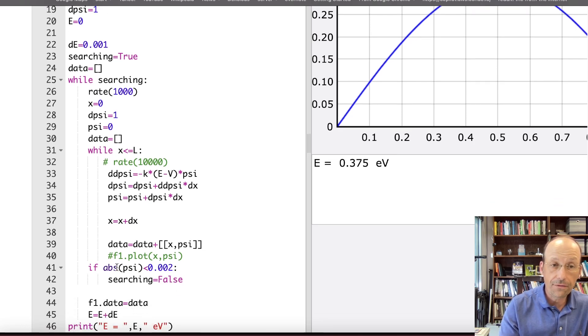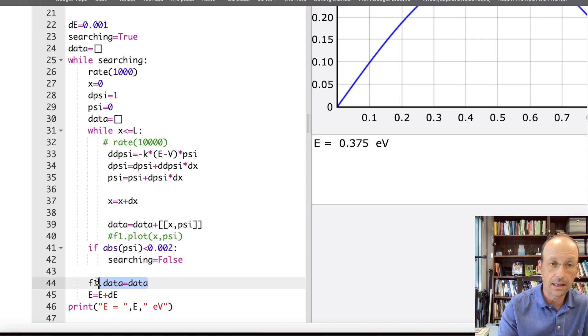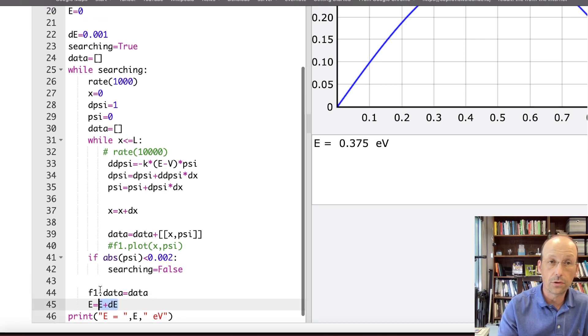Then I check if the final value is less than something. I just picked a number, .002. You can pick whatever you want. And then I plot the data. This plots that line. I increase the value of energy. And then I've got to do it all again.